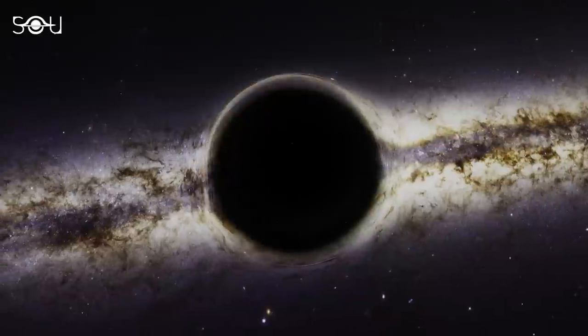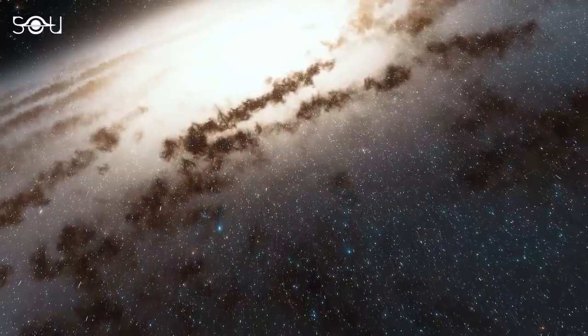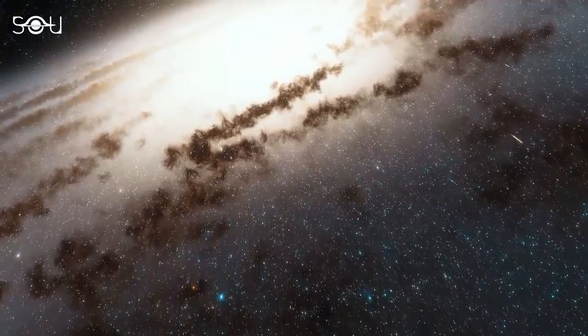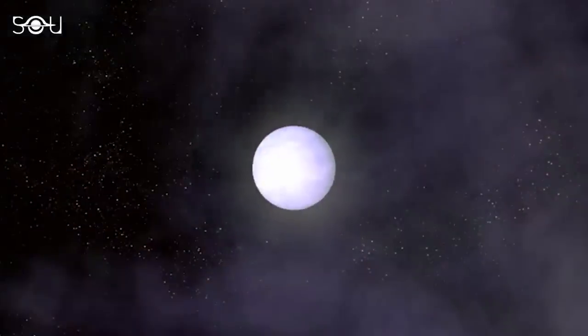The rogue black hole is moving at 45 kilometers per second, much faster than the stars in its vicinity, which means it's a runaway black hole. Hence, it was probably ejected into space when its precursor star exploded in a supernova. The event probably took place 100 million years ago.